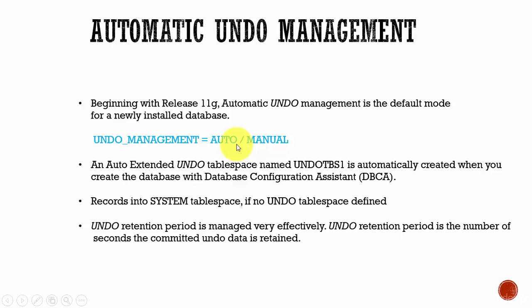If your tablespace is not configured with the auto-extend option, the database will dynamically tune the retention period based on the information it has. It will try its best to store as much undo data as possible, but if it doesn't have any space, it gives the 'snapshot too old' error.